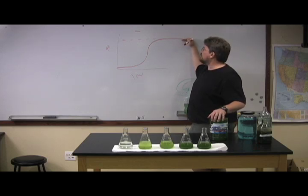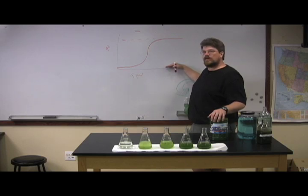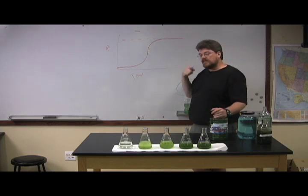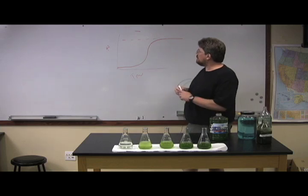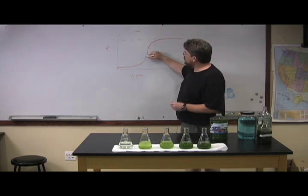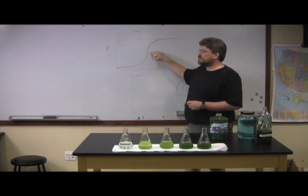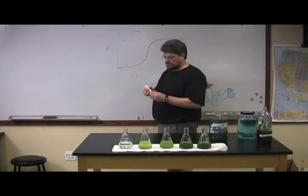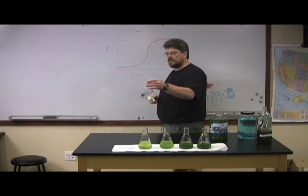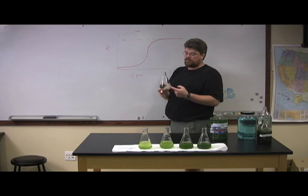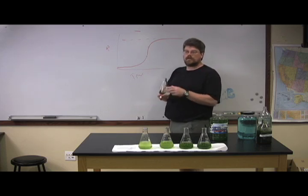If you harvest at this point, then you start back over at square one. If you want to harvest continuously and get the maximum amount of growth, then you want to harvest when your growth is somewhere in this zone. If you harvest down here at this point, you will not have enough cells. They have plenty of nutrients, plenty of sunlight, plenty of CO2, but they're so few they're growing really slow.